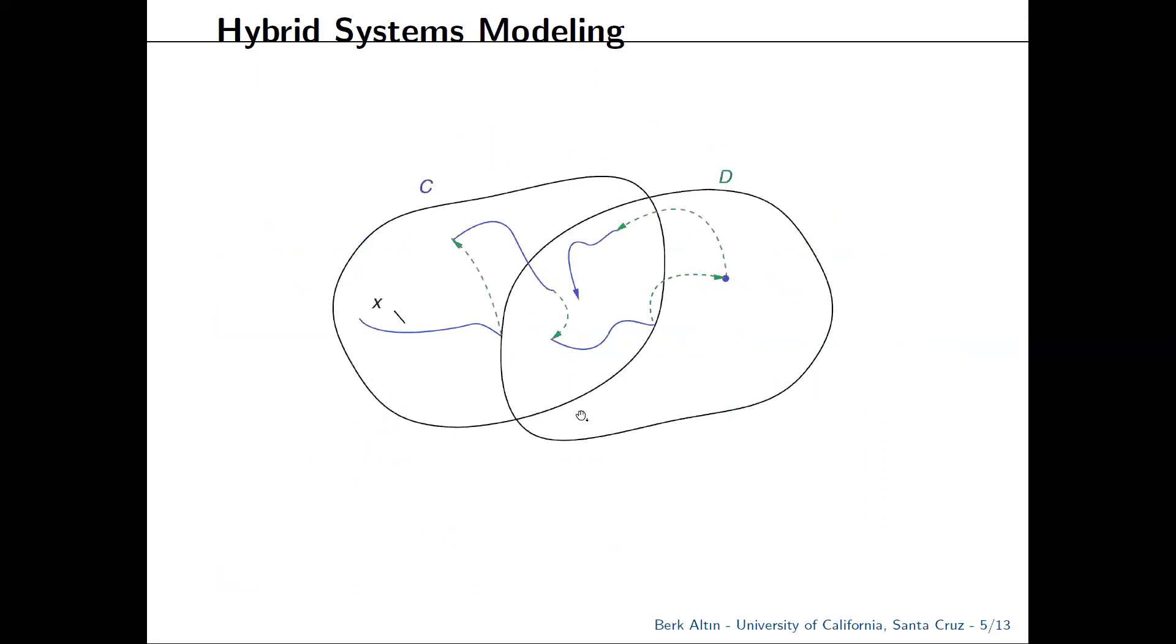Pictorially, this is how a solution might look like. We start at the flow set C where the continuous dynamics are active. We flow until we hit the jump set, at which point we jump and continue to flow until arriving at the intersection of the flow and jump sets. Now the solution has an option: it can flow or jump, adding additional non-uniqueness. In this picture, the solution continues to flow until jumping, then flows, then undergoes two consecutive jumps before flowing again.